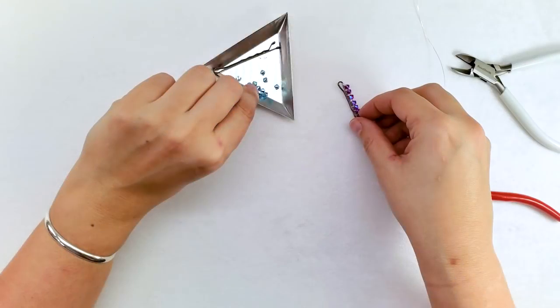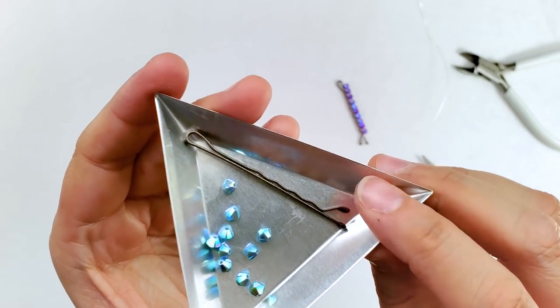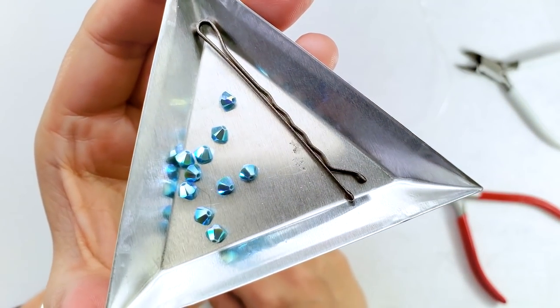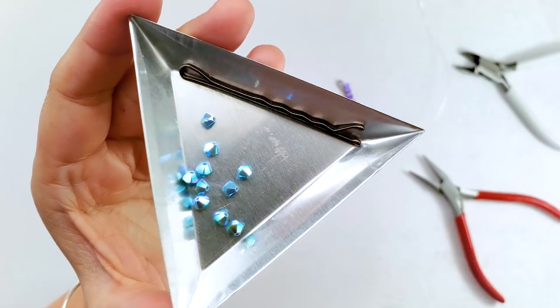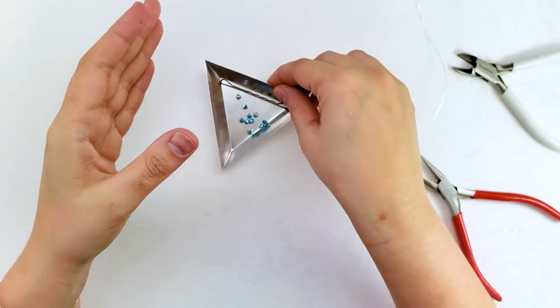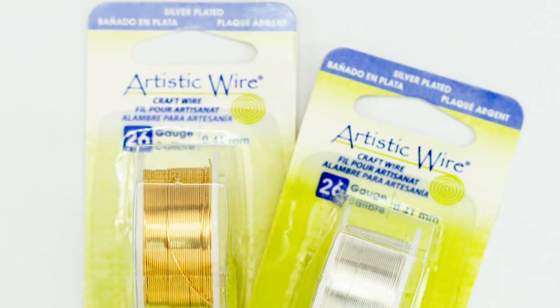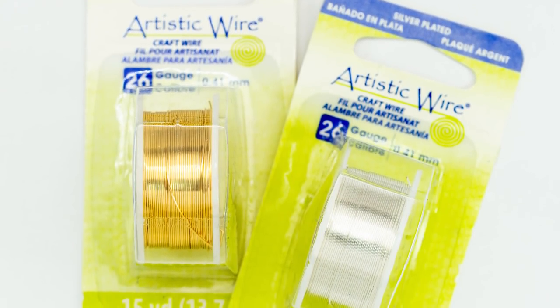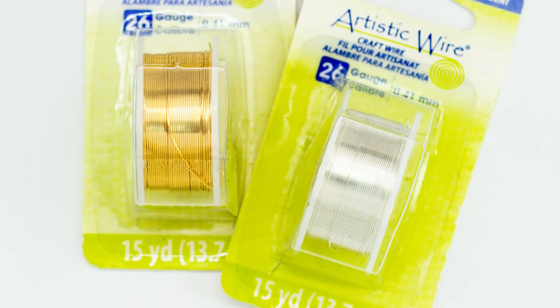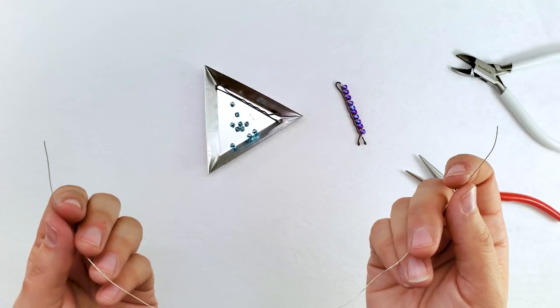So all we need are ten four millimeter Swarovski crystal bicones, a simple old bobby pin, and we're going to be using some 26 gauge wire. So this is 26 gauge non-tarnish silver colored craft wire. You can certainly use 26 gauge sterling silver wire if you'd like.